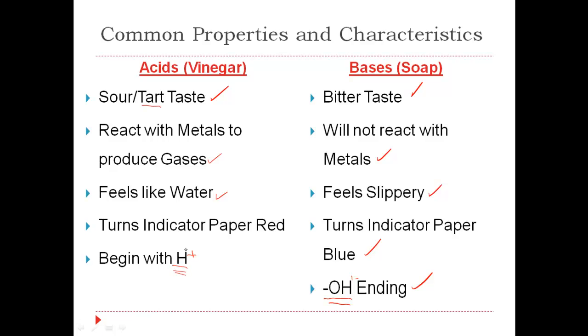And the Arrhenius definition of an acid has got to have an H plus in there. Because an Arrhenius definition of an acid is a substance that will produce H plus ions in a solution. So when you look at this, guys, properties and characteristics of acid in the bases are kind of cool.